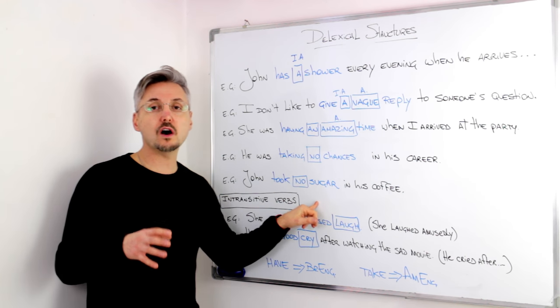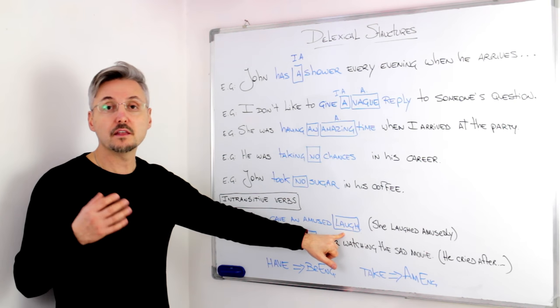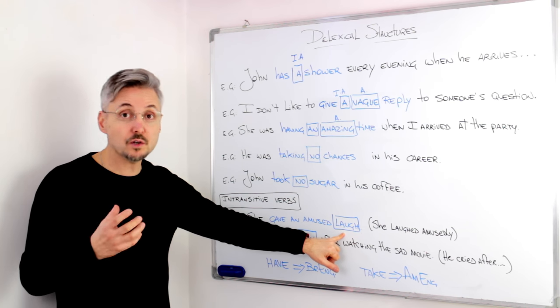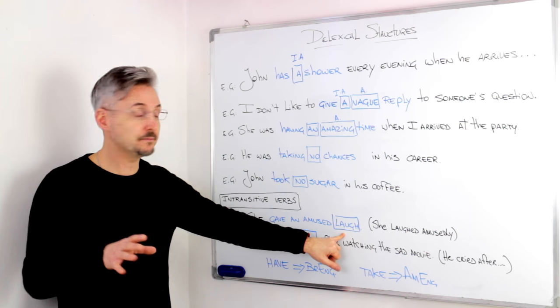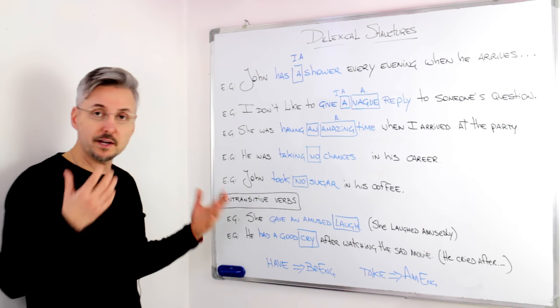Now, most of the, in these cases, the nouns, which are also sometimes verbs, can be intransitive verbs. So, for example, she gave an amused laugh.